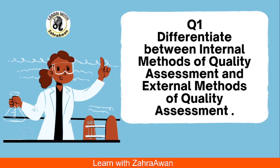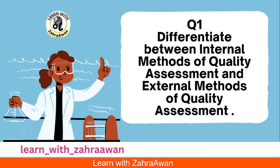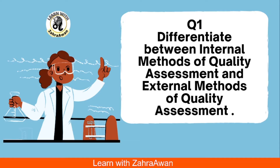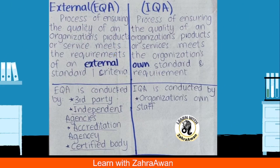Internal methods of quality assurance means: those methods which check the quality of our product but are done within the industry itself. We call it the internal method because the method checks the quality of our product inside our own industry. I have prepared rough notes for this explanation.